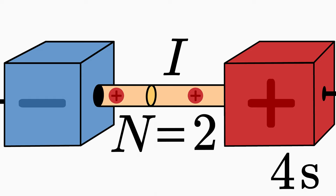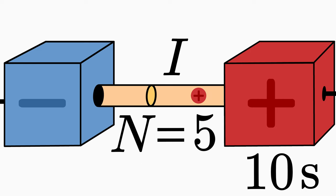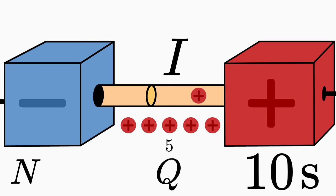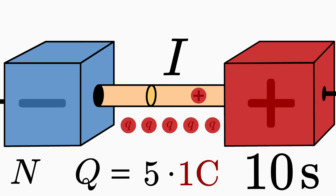One particle has passed, second particle has passed, third, fourth, fifth, stop. 10 seconds have already passed. So we counted 5 particles. How much electric charge was now transported through the cross-sectional area? Let's label the total charge with a capital Q. If 5 charged particles passed through, and each of them transported the charge of 1 Coulomb, then in total 5 Coulomb were transported. We just multiplied the number of particles N with their charge Q. So 5 Coulomb of charge were transported through the cross-sectional area within 10 seconds.